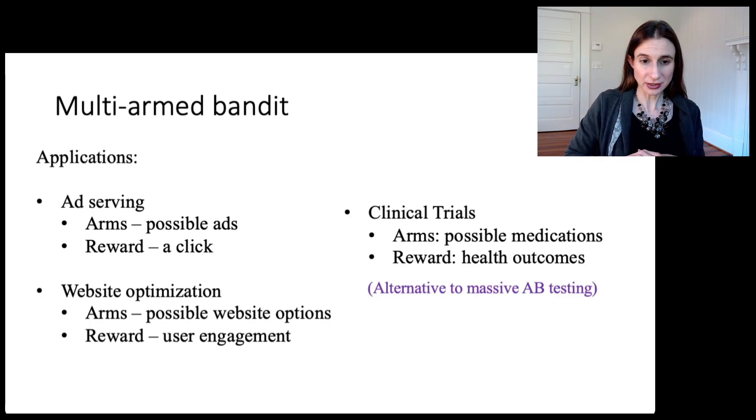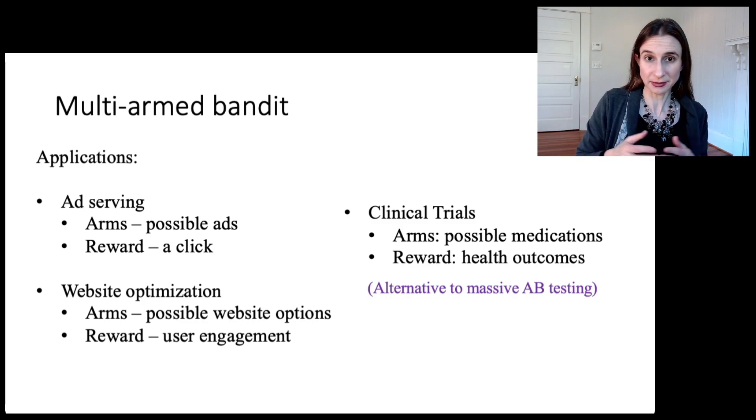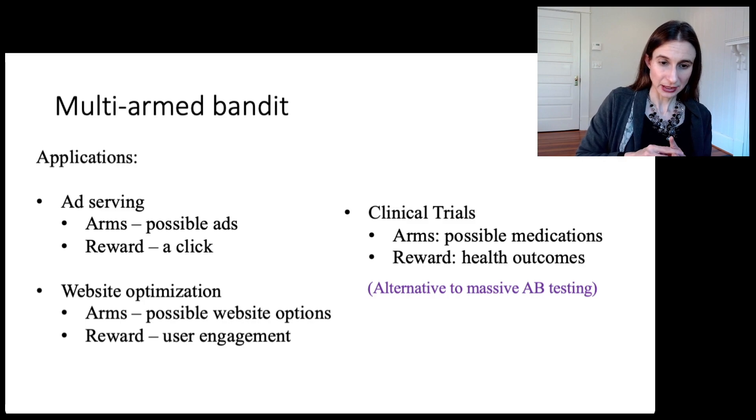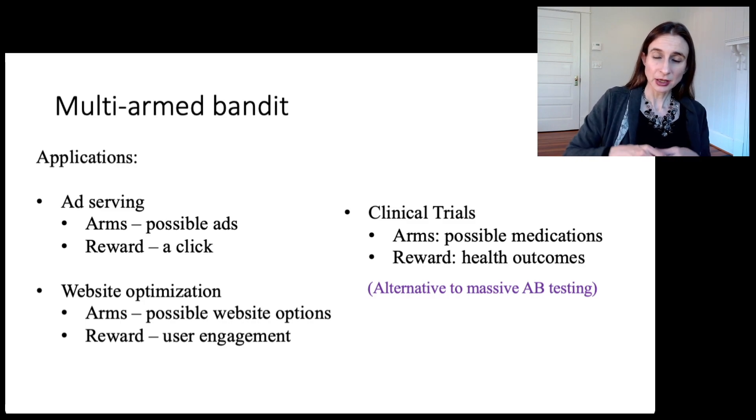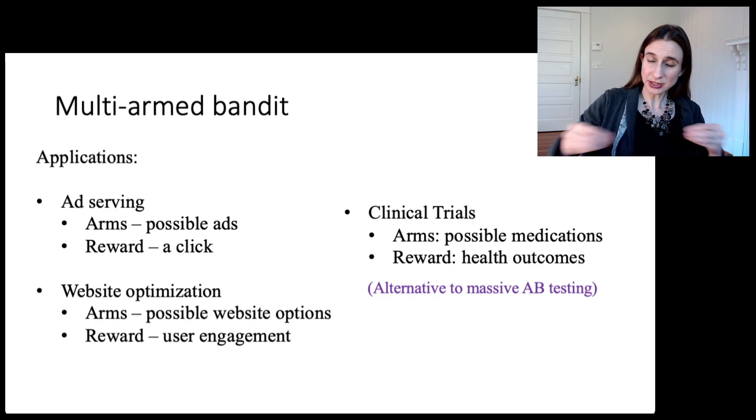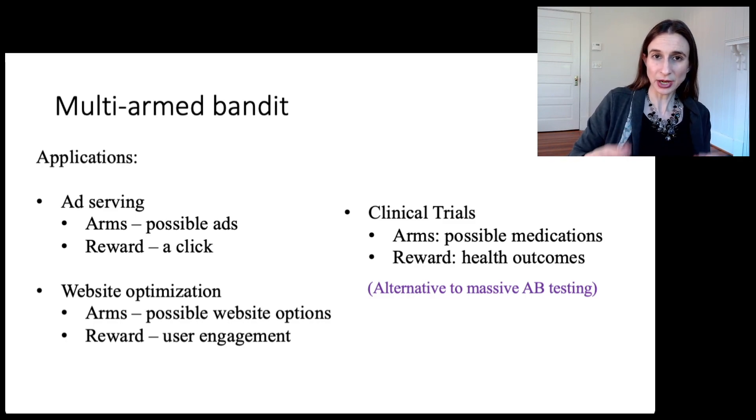Another application is clinical trials. The arms would be possible medications. Let's say you had 20 possible medications and you wanted to test them in a clinical trial. The reward would be some kind of health outcome. At the beginning, you might give patients all of these different 20 drugs. And then after a while, you might realize that some of these drugs are not working very well.